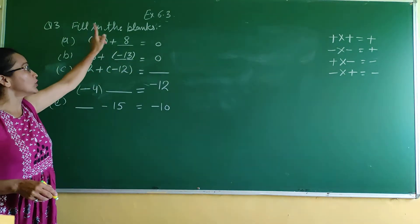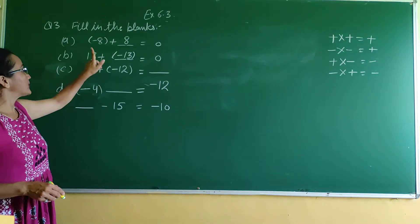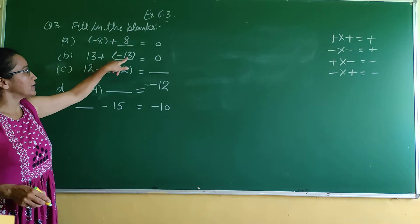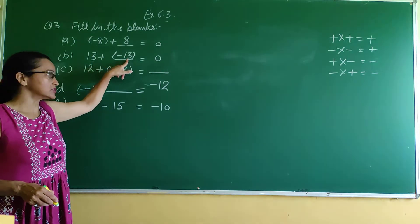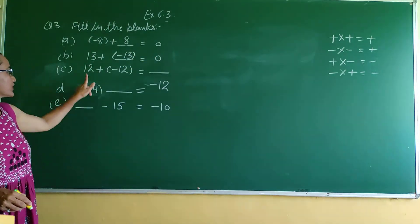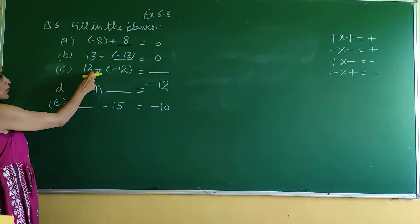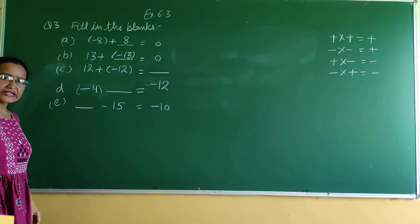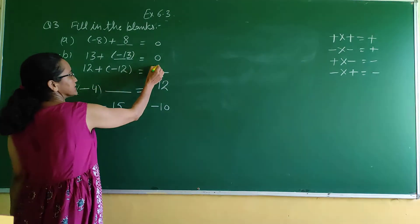Here we had -8, so we added +8. Here we have +13, so we add -13. We follow the same pattern. Next is 12 plus -12. Your 12 is positive and 12 is negative.